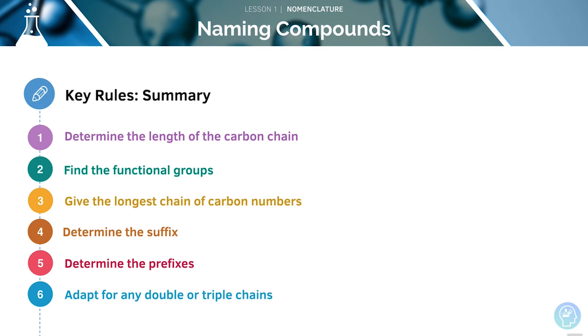Here's another summary of the key rules for naming compounds. First, we need to determine the length of the carbon chain, then find the functional groups. Next, we give the longest chain of carbon numbers and use the groups to determine the prefix and the suffix. Finally, if there are any double or triple chains, we must adapt for these.